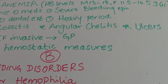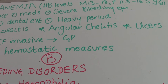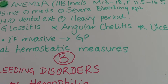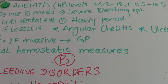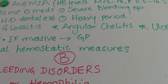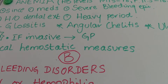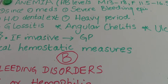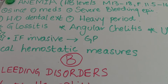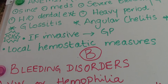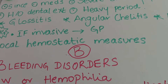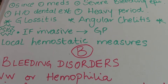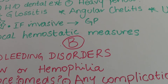It may also be the case that the patient doesn't know they're anemic and presents with glossitis, angular cheilitis, or ulcers, where anemia could be one of the causes. If there is an anemic patient and we have any invasive procedures, we need to first consult the GP before carrying out extractions, gingivectomies, or anything involving potential excessive bleeding. We should also use local hemostatic measures like squeezing the socket, placing cellulose in the socket, and suturing.